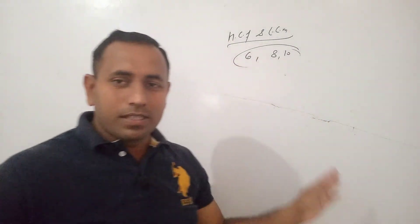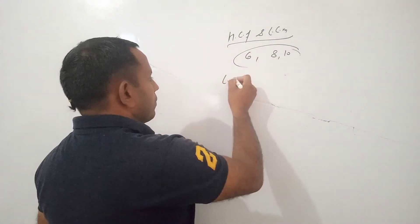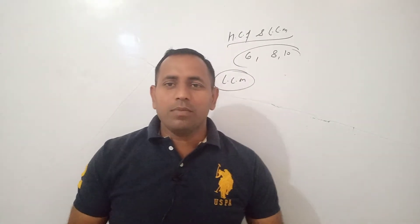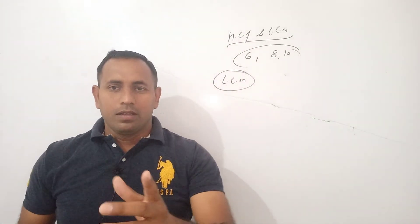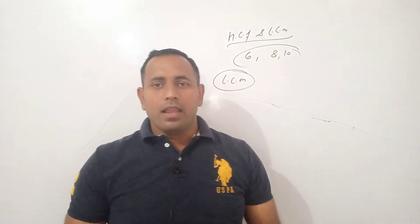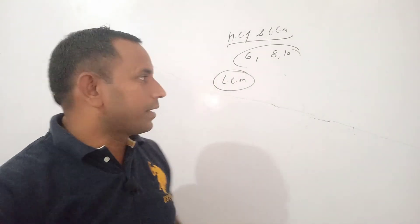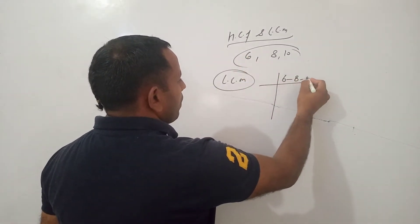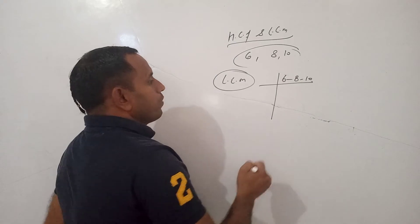Now, LCM of these numbers. So what is LCM? LCM is least common multiple. HCF highest common factor and LCM is least common multiple. So let us find out LCM. So LCM we can find out jointly.